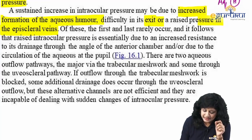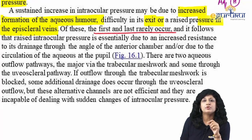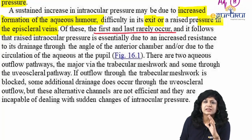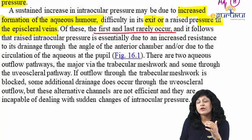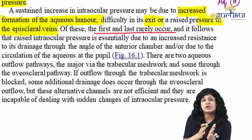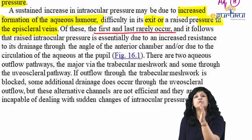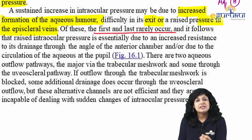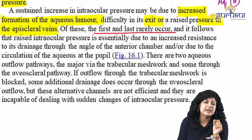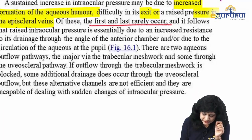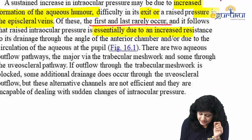Of these three causes, the first and last rarely occur. Conditions with more secretion of aqueous humor — like hyper-secretory glaucoma, which occurs in epidemic dropsy — are very rare. It's also not common to have raised episcleral venous pressure. So most of the time, when we have glaucoma, we think about decreased drainage. The raised IOP is essentially due to increased resistance to drainage through the angle of the anterior chamber or difficulty in aqueous circulation at the pupil.